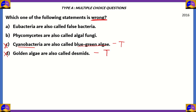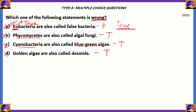Option B: phycomycetes are also called algal fungi. Phycomycetes are the least developed of the fungi, and they are called algal fungi. It is groups of phycomycetes that ally themselves with algae in order to form lichens. So option B is true, making it incorrect as our answer. The incorrect statement is option A: 'Eubacteria are also called false bacteria.' The prefix 'eu' means 'true', so eubacteria are called true bacteria, because they are more advanced and developed than archaebacteria. This statement is false, making option A the correct answer for this 2016 question.